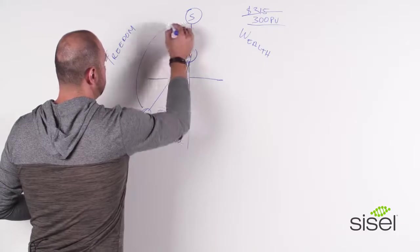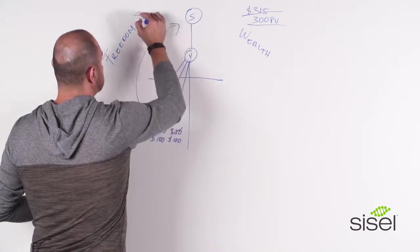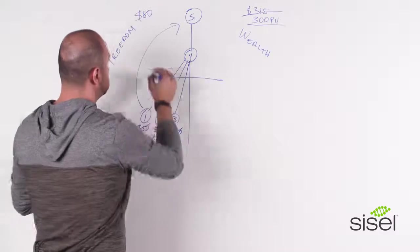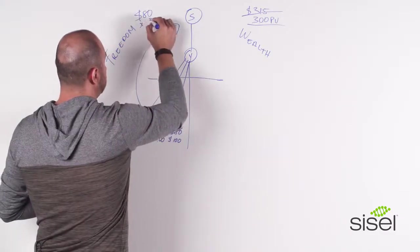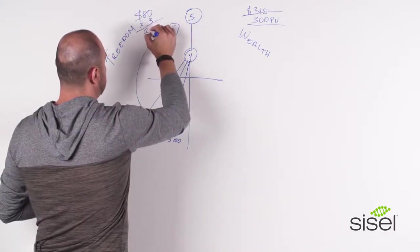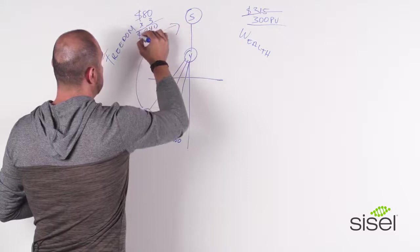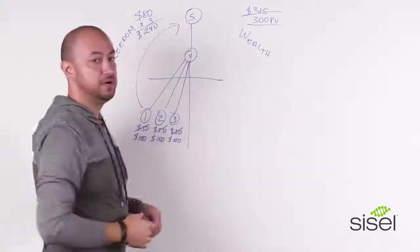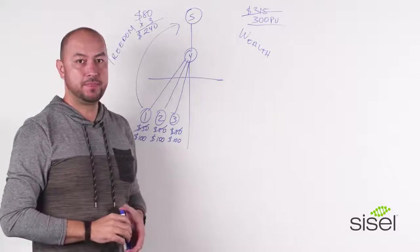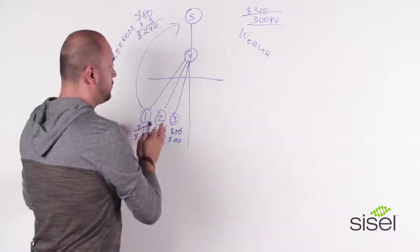So if you sign up the three people, your sponsor will get $240 just by you signing up these three people. So that is your first goal.